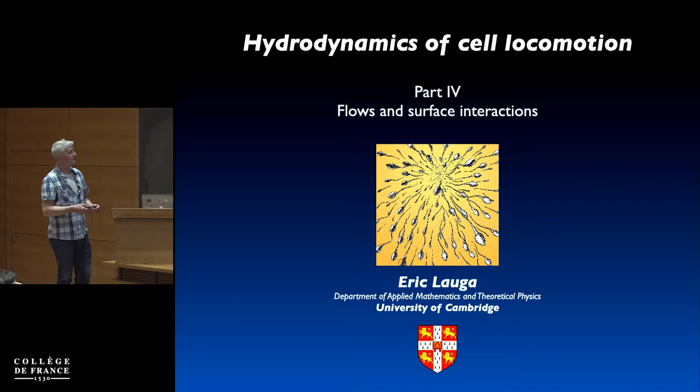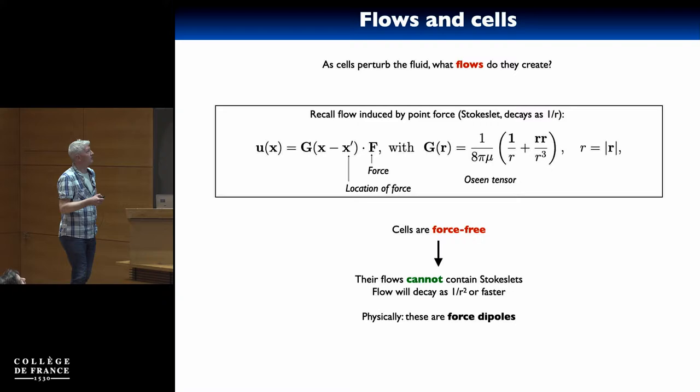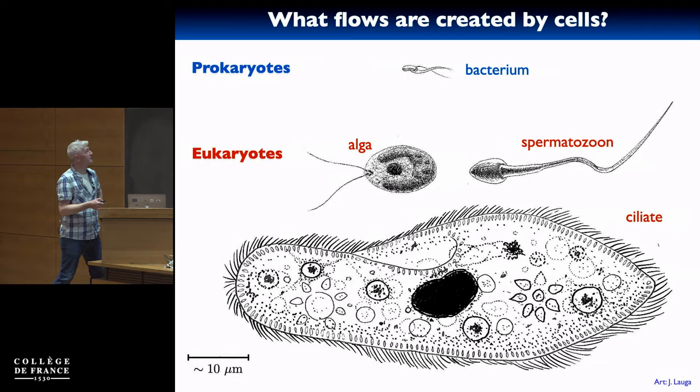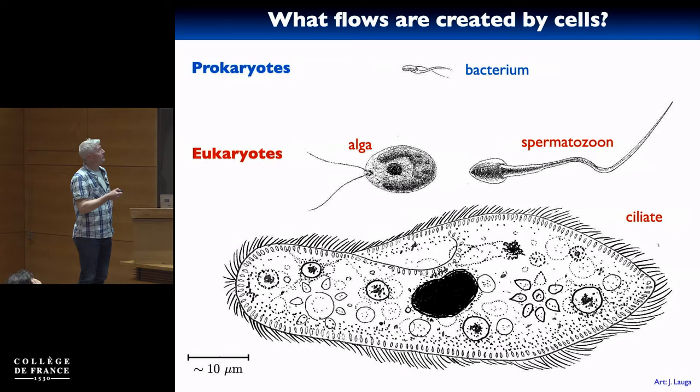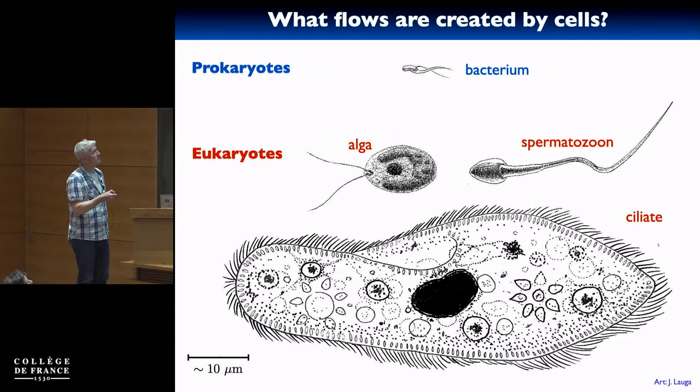The first picture I've shown already a few times — these are the types of organisms we've discussed so far. Today I'm going to ask a generic question to begin with: all of those organisms create flow. They perturb the fluid around them because they're moving relative to the fluid that doesn't move, so they create a flow around them. How do you think about and model the flows created by the cells? Of course there's a big range of length scales, but if we look away from the cell at length scales much larger than their individual scales, the flows will be very generic — we can describe them in a very generic fashion.